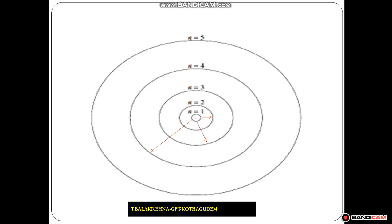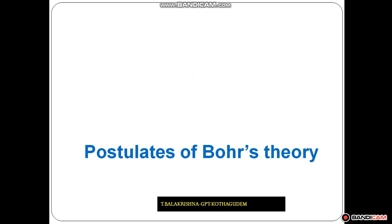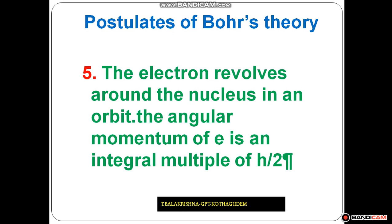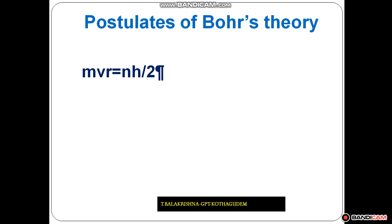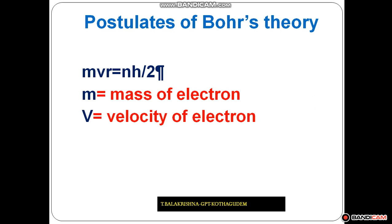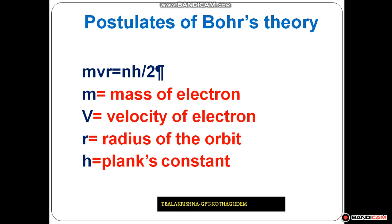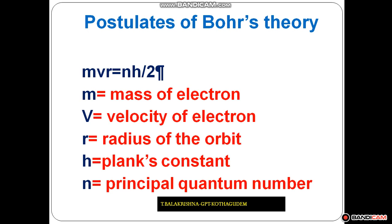The electrons revolve around the nucleus in an orbit, and the angular momentum of an electron is an integer multiple of h/2π. If an electron is revolving in a fixed circular path, every electron has some angular momentum. That angular momentum is calculated by the formula mvr = nh/2π, where m is the mass of the electron, v is the velocity, r is the radius of the orbit, h is Planck's constant (6.625 × 10⁻²⁷ erg·seconds), and n is the principal quantum number.